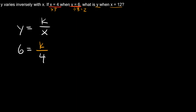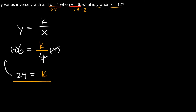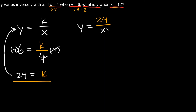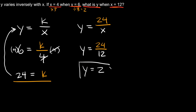Now we can write the equation as y is equal to 24 over x. For the last part — what is y when x is equal to 12 — plug in 12 for x: y is equal to 24 over 12, and 24 divided by 12 is equal to 2. So y is equal to 2, which is exactly what we expected.